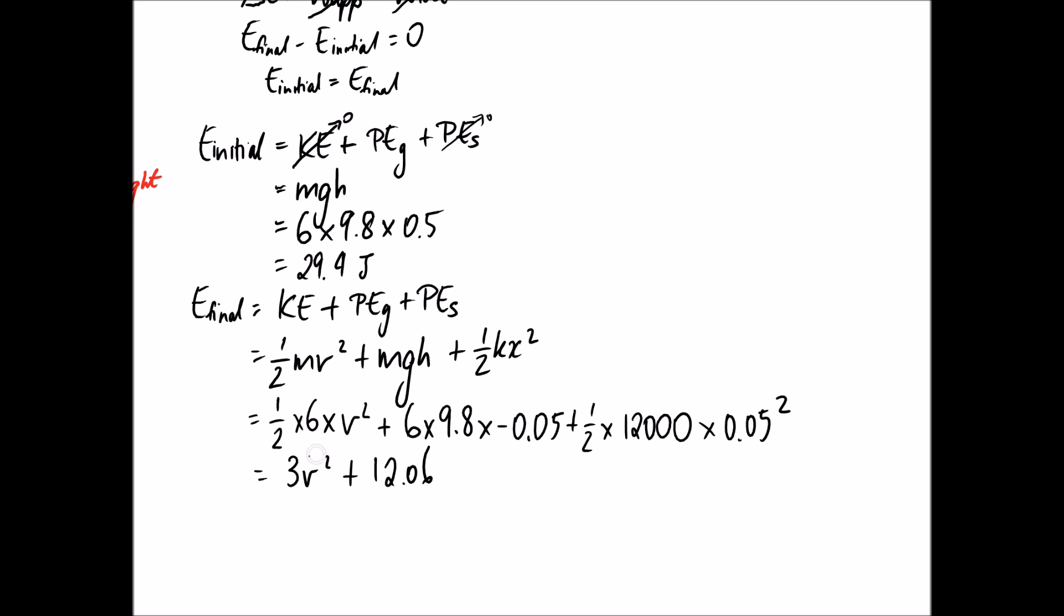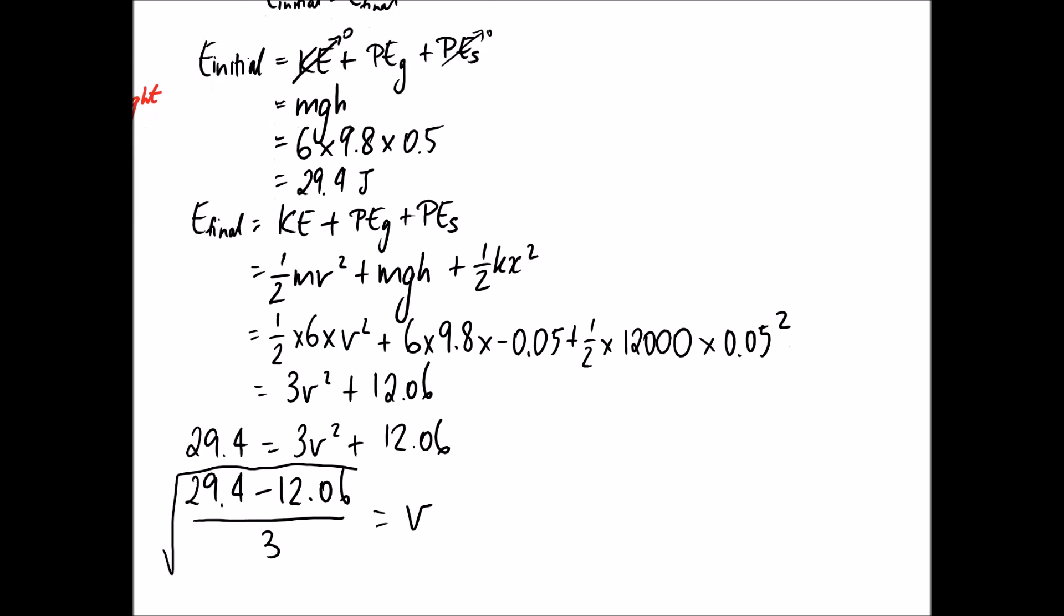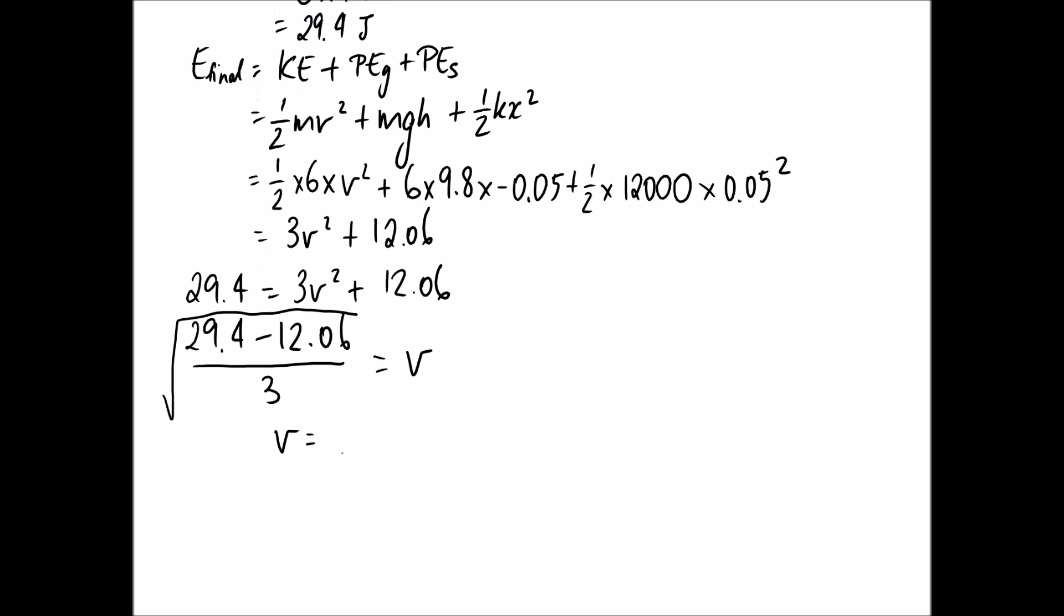Now that we've worked out what the initial and the final actually are, we can go back and put them into our equation that we started with. What we know is that 29.4 joules has to equal 3v squared plus 12.06, and now it's just a matter of solving for v. 29.4 minus 12.06 divided by 3, and square root it, gives you the velocity. If you solve for this number, it comes out to be 2.4 metres per second. That's the final answer for the question.